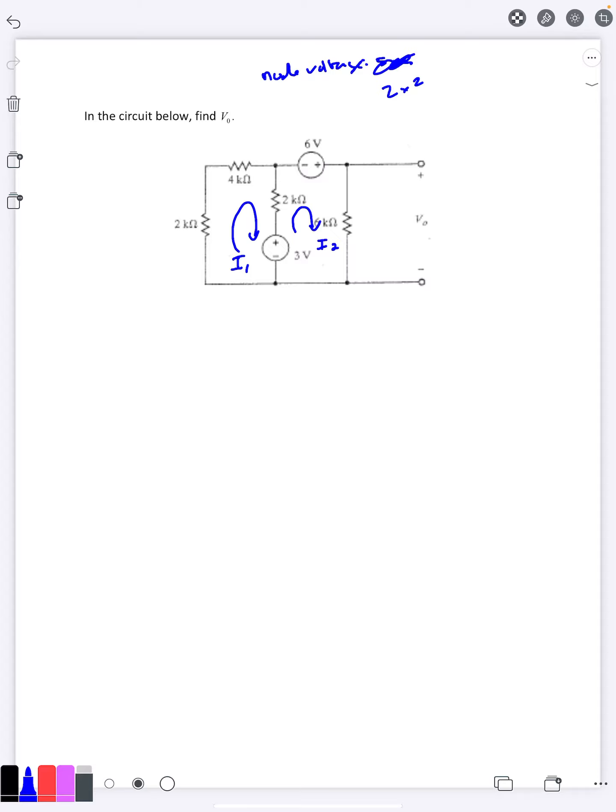So I'm just going to go ahead and use mesh current analysis here. I think it'll be a little bit easier. So I'll call it i1, i2. KVL at our first loop is 2k times i1, and then 4k i1, then 2k (i1 minus i2) plus 3 volts equals 0.